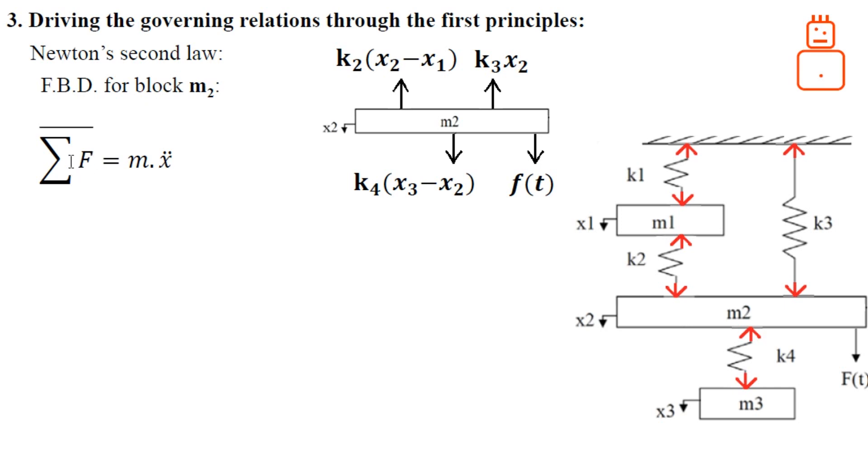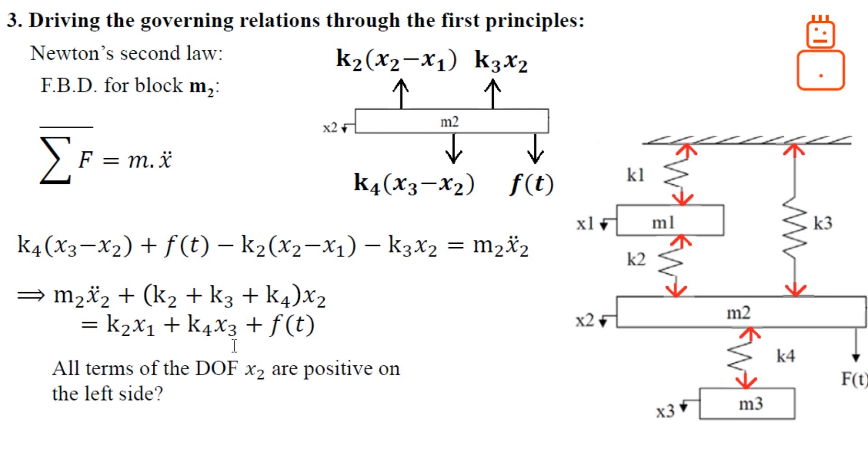Applying Newton's second law, don't forget these forces have to follow the direction of the assumed coordinate which is downward. These two forces are positive whereas these two forces are in a negative sign. Rearrange this system. As you can see on the right side, all the corresponding terms of the degree of freedom x2 are positive, so the answer is yes. This equation is correct and we can represent it as our second governing equation.